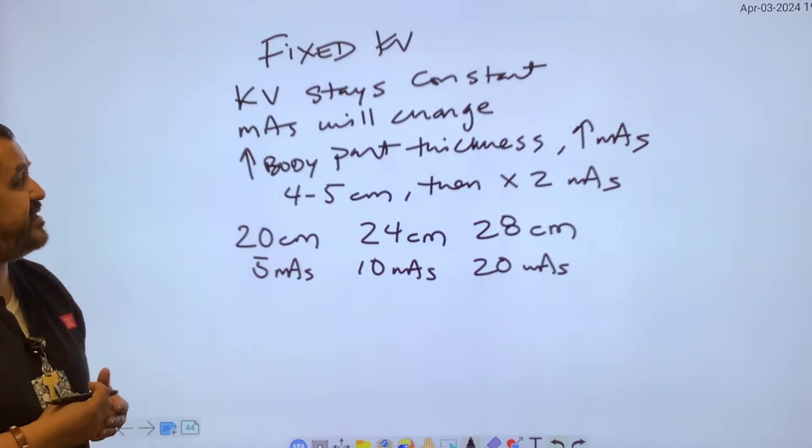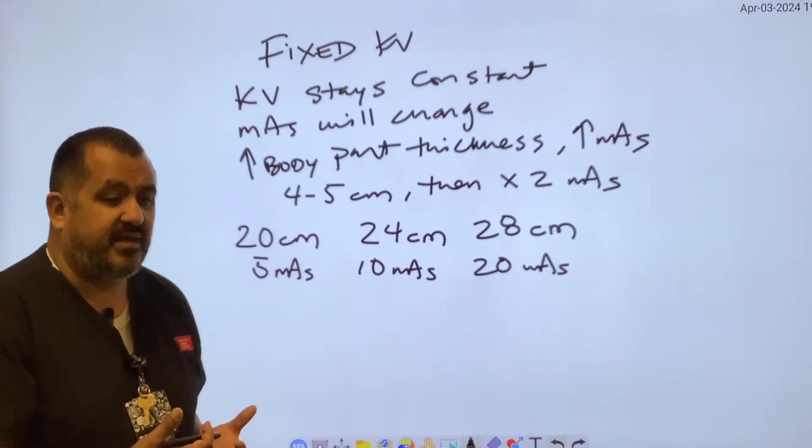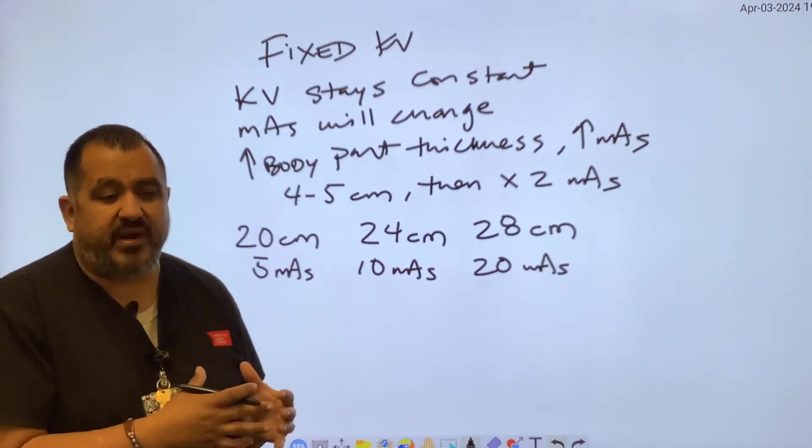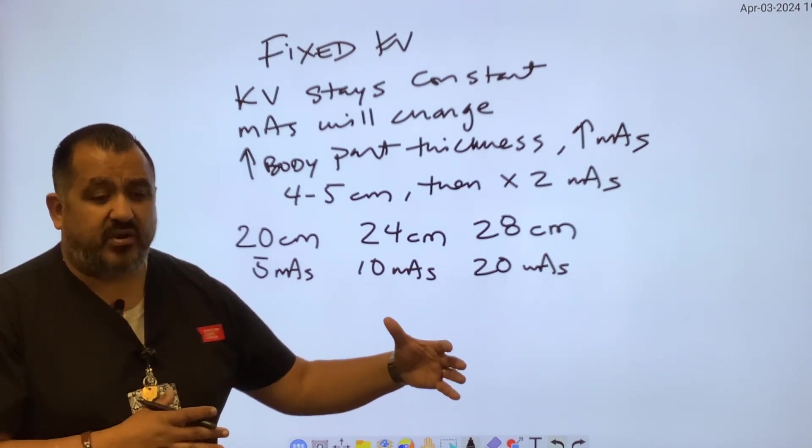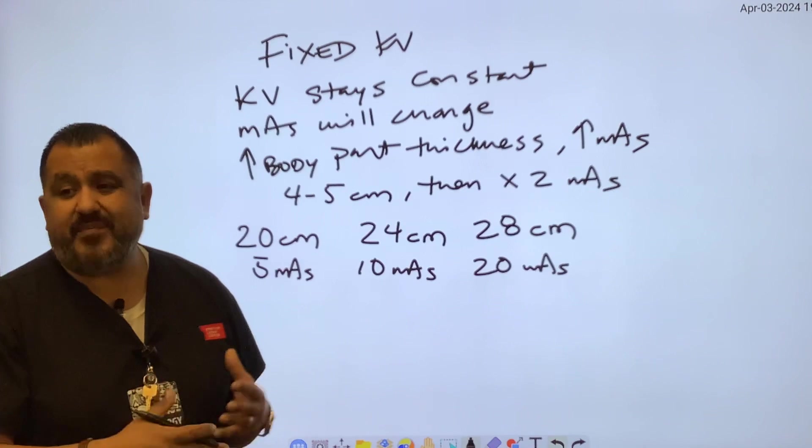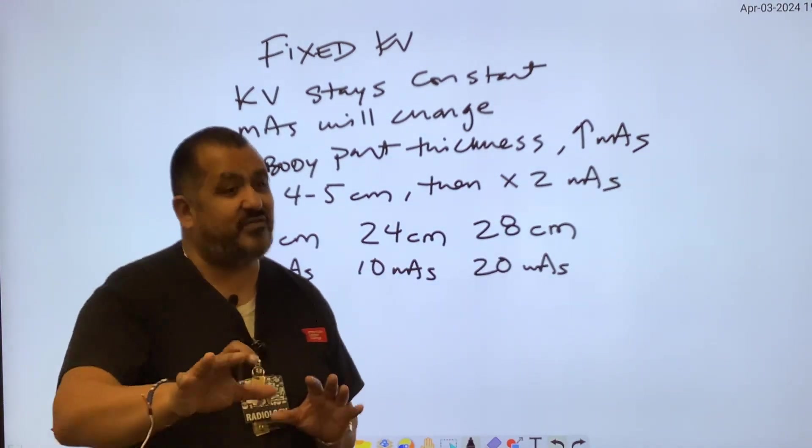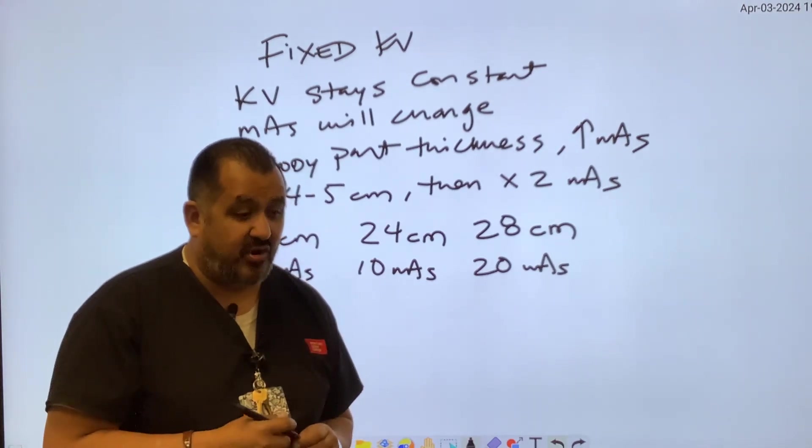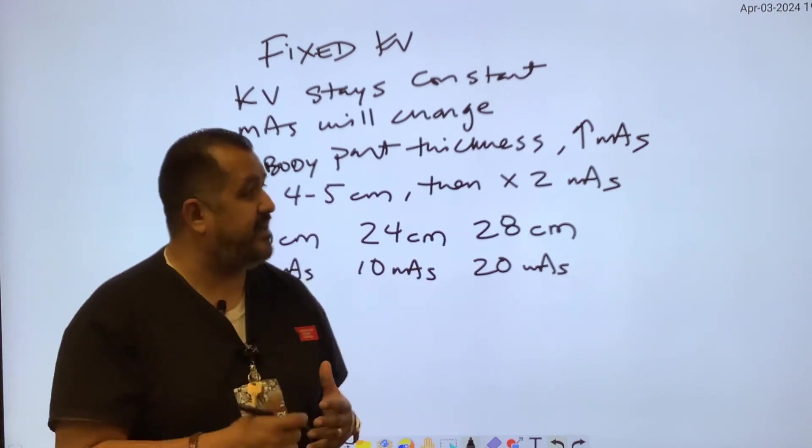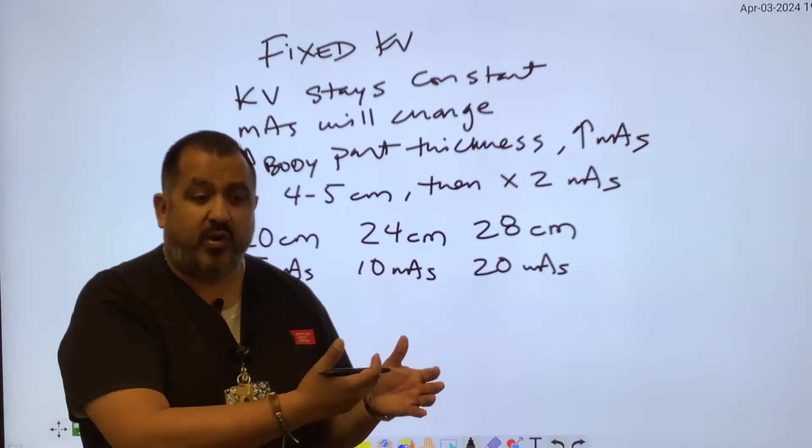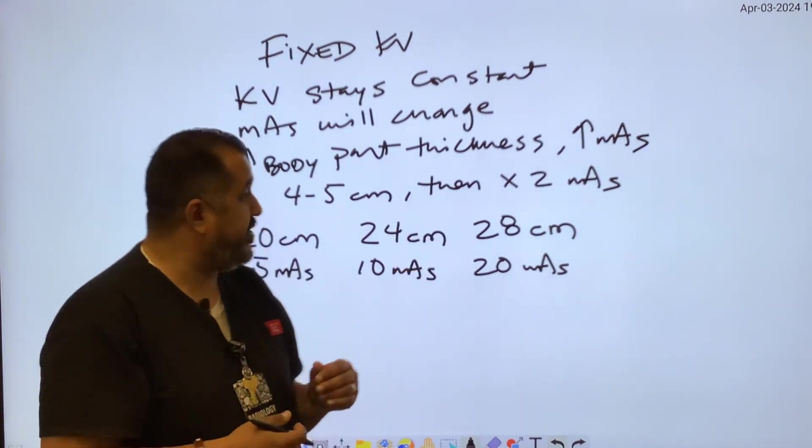Fixed KV technique charts are great because they're always using optimal KV. But let's say you don't want low contrast or longer scale contrast, you want short scale. Well, you may not be able to do that because you're always using optimal KV. Now, one benefit of using optimal KV is that you always have higher KV and lower mAs, so it's less patient dose. But you're trying to find that proper balance between the quantity and quality of x-rays going through the object.